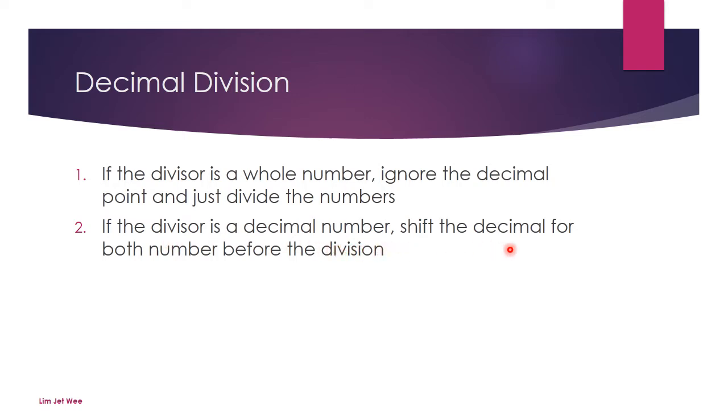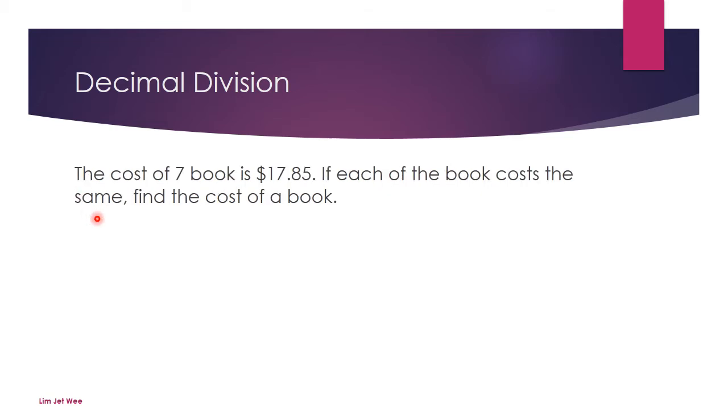are supposed to shift the decimal for both numbers until there is no decimal value. But in your syllabus, most of the time you will end up with this first section, which is basically the divisor itself most of the time is a whole number. If we look at